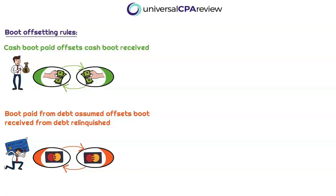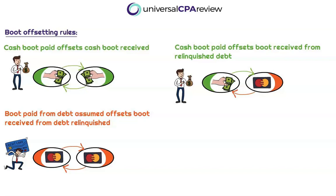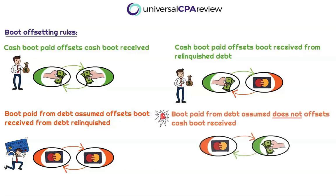Cash boot paid can offset boot received from relinquished debt. So if Leslie is assuming Kenneth's debt associated with the land that he is exchanging, that is boot to Kenneth. But if Kenneth pays Leslie cash in conjunction with this exchange, he can offset that boot received from the relinquishment of the debt. However, boot paid from debt assumed will not offset cash boot received — if Kenneth is paying off Leslie's debt and Leslie is paying Kenneth cash, he's going to have to pay tax on that cash and recognize the boot no matter what.